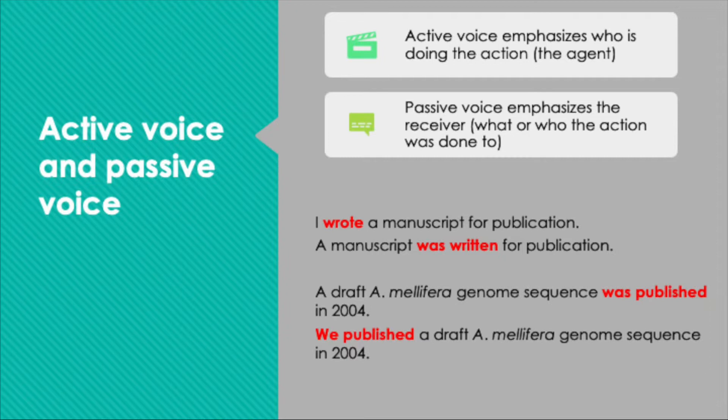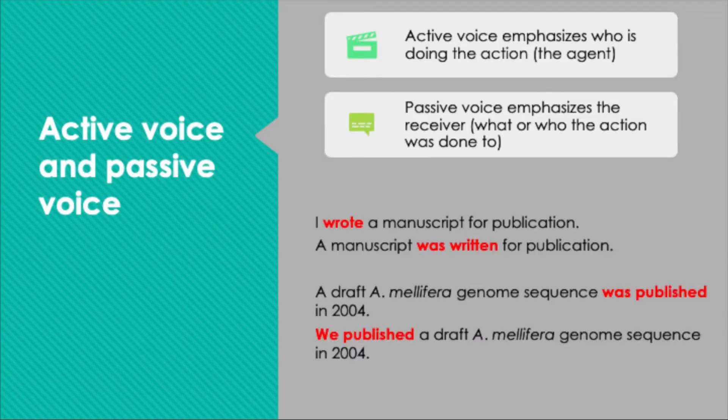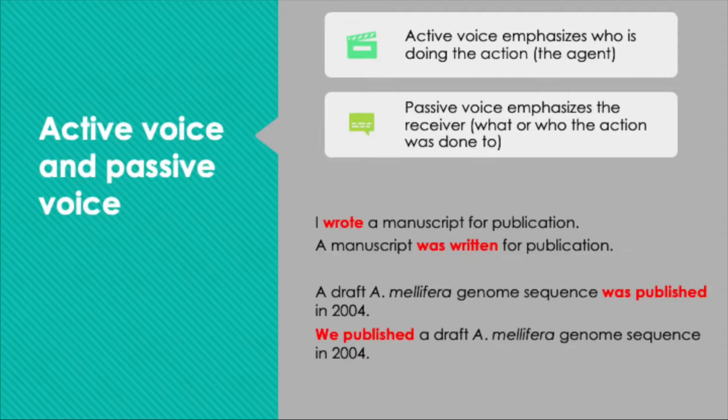Here is an example: 'I wrote a manuscript for publication.' 'Wrote' is an active verb and it's emphasizing 'I' — I am the agent. Now if I wanted to change that sentence to the passive voice, I would say: 'A manuscript was written for publication.' Who wrote the manuscript? It doesn't say. The agent is minimized — we don't really know anything about the agent; what we know about is the manuscript.